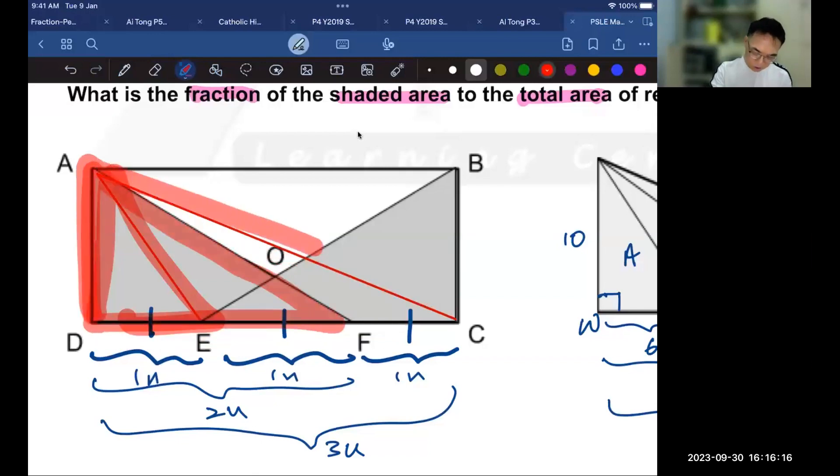their area has a ratio of one is to two is to three, because the ratio of their base is one is to two is to three. We have just learned that.